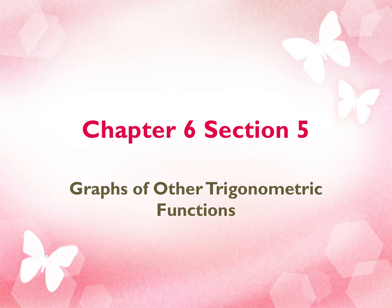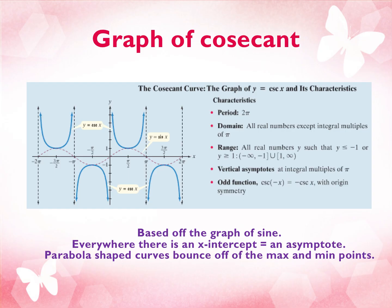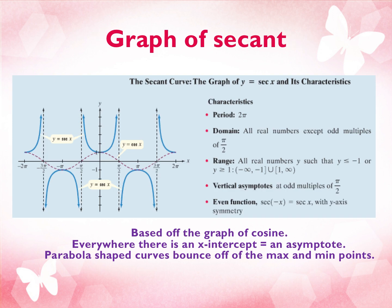Today we're going to finish up Chapter 6, Section 5, and learn how to graph the tangent. Yesterday we saw the graph of cosecant, the graph of secant, and then we did two examples.